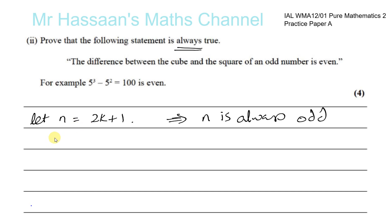We also need to state that k is an element of the integers — k is an integer — meaning a whole number, positive or negative, because odd numbers can be negative and positive. So if n equals 2k plus 1 and k is an integer, then n is always odd: multiplying an integer by 2 gives an even number, and adding 1 makes it odd. For example, k=0 gives n=1; k=2 gives n=3; k=3 gives n=7; k=-1 gives n=-1.